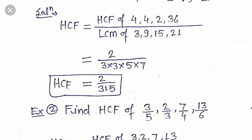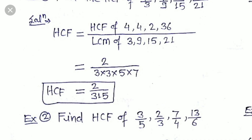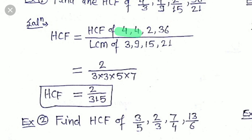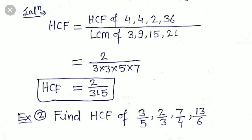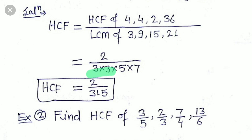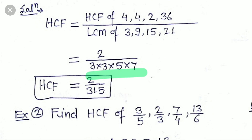The HCF is the largest number which divides all the numerators. The largest such number is 2, which can divide 4, 4, 2, and 36. So HCF of numerators is 2. For LCM of denominators: 3 appears maximum 2 times (in 9), 5 appears 1 time (in 15), and 7 appears 1 time (in 21). So LCM is 3² × 5 × 7 = 9 × 5 × 7 = 315. Therefore, HCF of this set of fractions is 2/315.